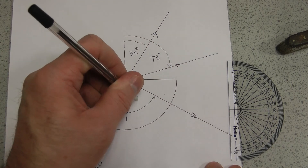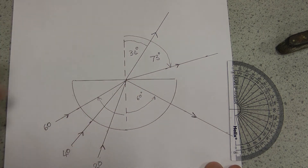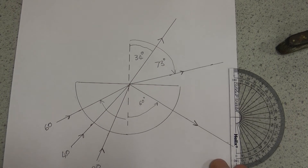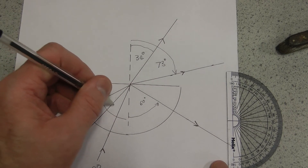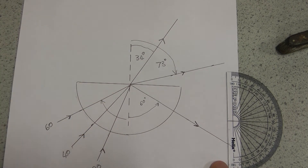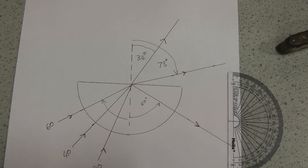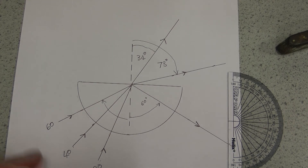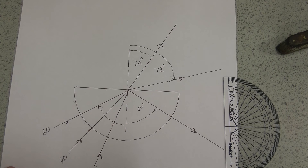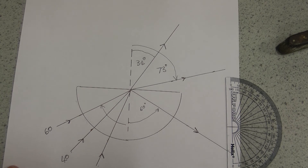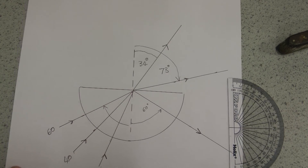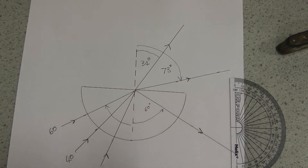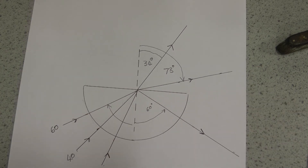When all the light is totally internally reflected, there's a name for that — it's called total internal reflection. The big question is: at which point do we go from the light being refracted to the light being totally internally reflected? There must be a critical angle at which that happens.